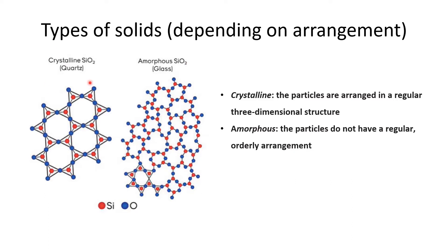In a crystalline solid, the particles are arranged in a regular three-dimensional structure — there is a particular arrangement repeating again and again, as seen in crystalline silica, also called quartz. In an amorphous solid, the particles do not have a regular orderly arrangement. For example, you might see a star shape in one part of the structure but not in another — this is the structure of amorphous silica, also called glass.